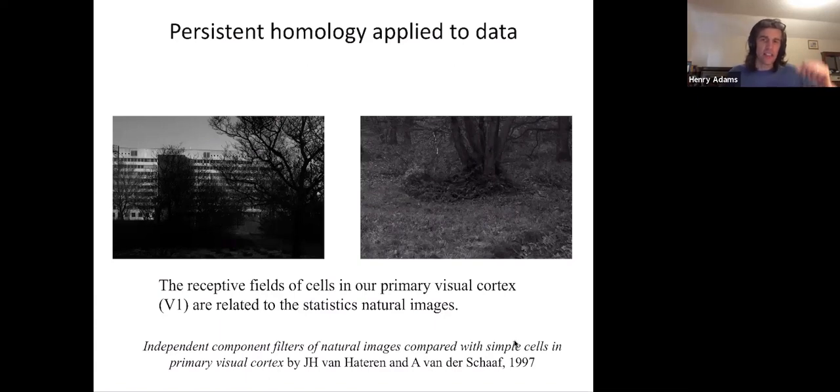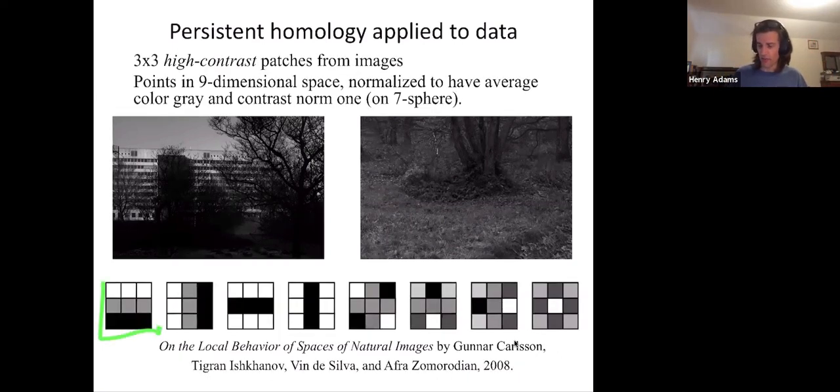All right, so the data set that we're going to look at is three by three pixel patches from black and white photographs. So take your digital camera, go around and take a bunch of pictures, and then from those pictures, crop out three by three pixel patches. So that might be some very small, tiny square that you cut out here, or some very small tiny square that you cut out here. Just three pixels by three pixels. Each patch has nine pixels, and so we can encode each patch as a point in nine-dimensional space, because it has nine different numbers, including the level it is from white to gray to black.